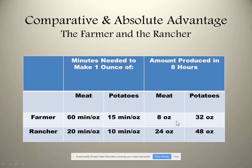Who has the absolute advantage in meat? Clearly the rancher can make more in a given eight hours. What about potatoes? The rancher can make more of those too. In this case, one producer has the absolute advantage in both goods.